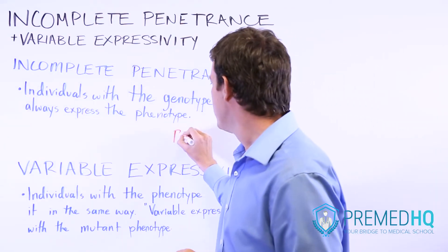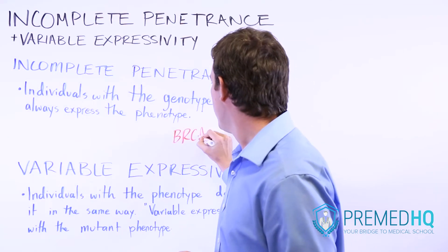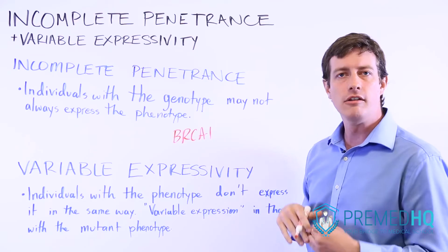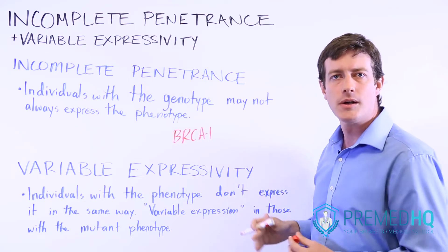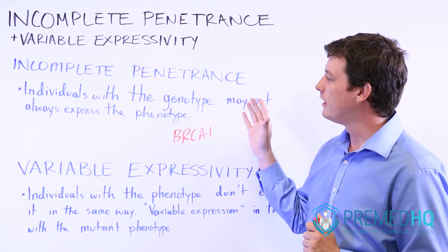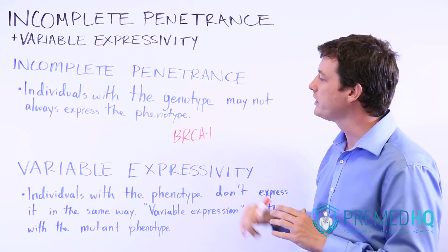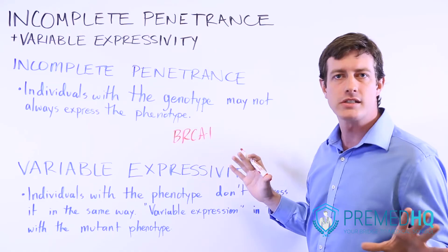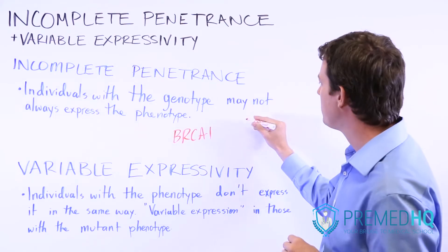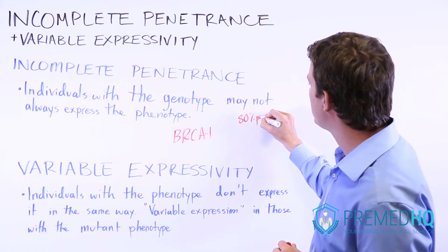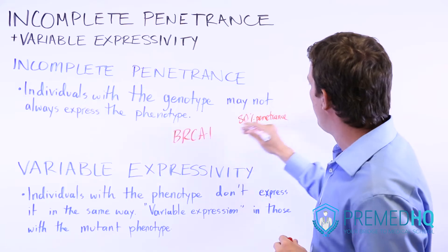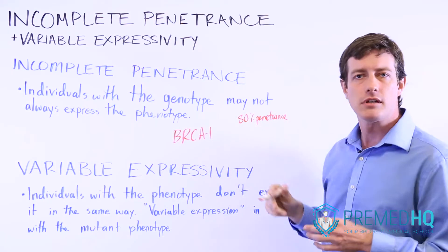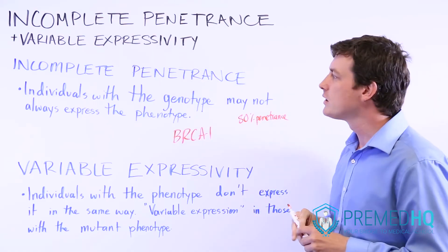One example you'll see quite often is the BRCA1 gene, which is involved in familial breast cancer. Because of incomplete penetrance, only 80% of the people with this BRCA1 mutation will end up exhibiting breast cancer throughout their life. So it has 80% penetrance — of the people that have this gene mutation, 80% of them will exhibit that phenotype.